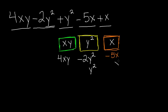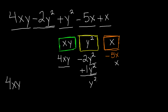4xy has no other like terms, so I'll write it as it is: 4xy. For the y² category, we have negative 2y² and positive y². Since there's no constant before the second term, we write it as positive 1y². Since y² and y² are the same, I bring that down: negative 2 plus positive 1 gives us negative 1y².